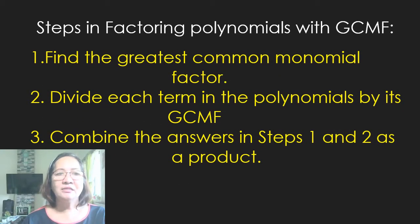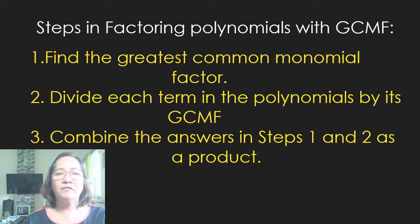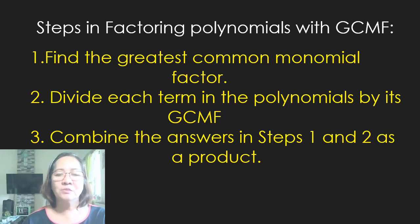The steps in factoring polynomials with GCMF are: First, find the Greatest Common Monomial Factor. Second, divide each term in the polynomial by its GCMF. And third, combine the answers in steps 1 and 2 as a product.